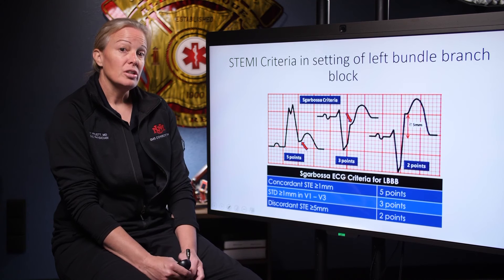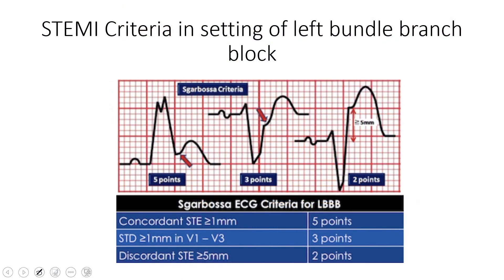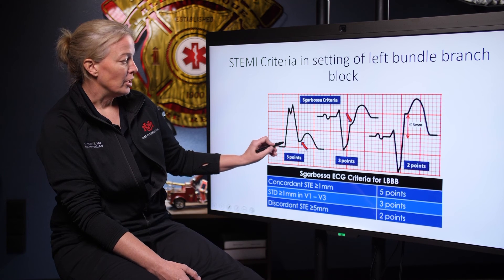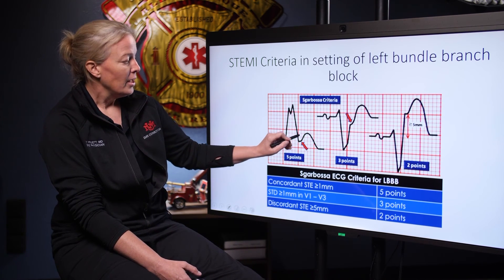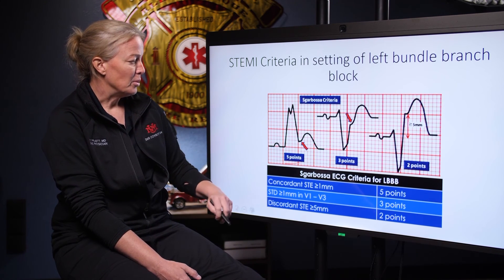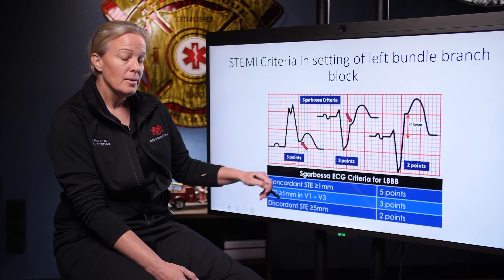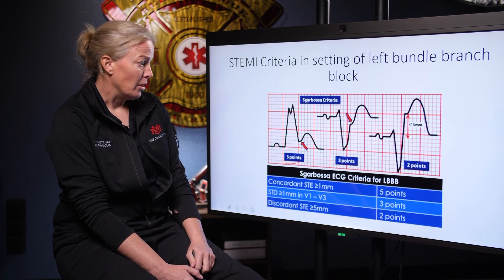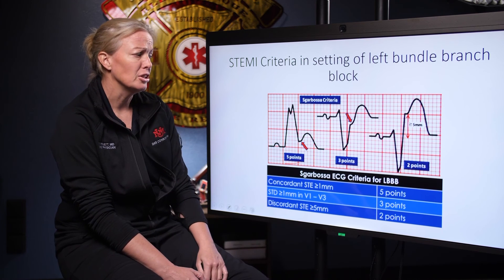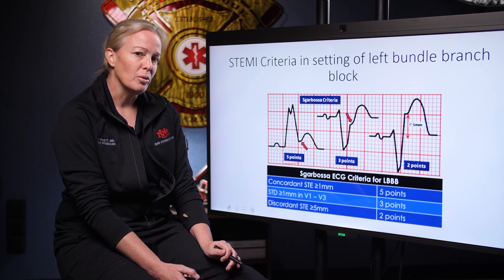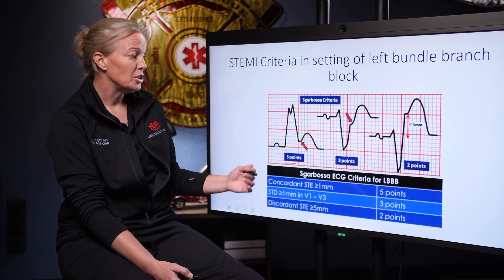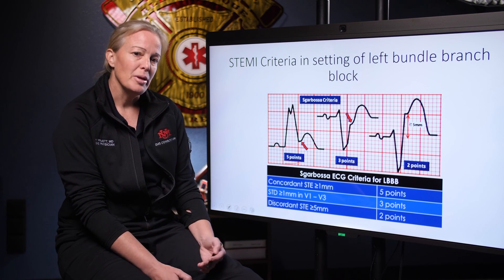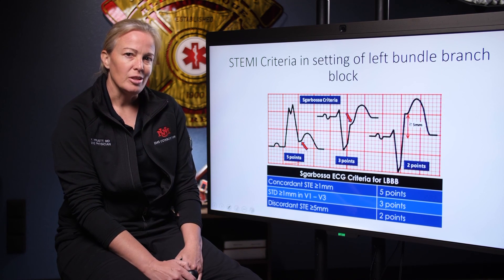There is a way to identify a STEMI in a left bundle — it's called the Sgarbossa criteria, specifically the modified Sgarbossa criteria. I won't go over it in detail today, and you may not need to commit it to memory — I have to look it up almost every time I'm worried about it too. The important changes to look for are concordant changes: if the majority of the QRS vector is up and the T-wave is also up, that gives you five points on the Sgarbossa criteria — a big indicator. Concordant changes in the precordial leads suggest ischemia. Also ST depression or ST elevation greater than five millimeters — we talked about a little ST elevation being normal, but profound ST elevation scores points on the Sgarbossa criteria to suggest myocardial ischemia. Feel free to look this up if you need to.